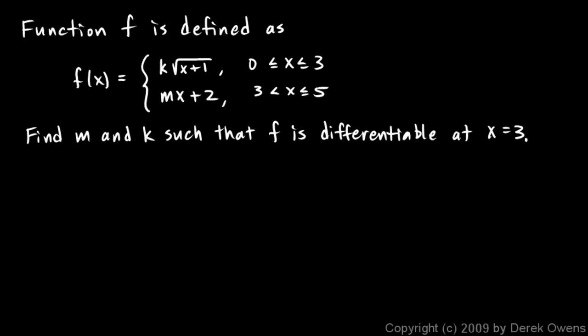So you can get a mental picture of this. This function only exists in the first quadrant, and it's some constant times some sort of square root function here, so it's probably going to look something like this, up to the point x equals 3, and then beyond that it's a line, mx plus 2, some certain slope.